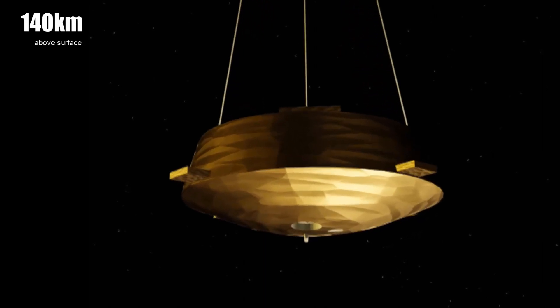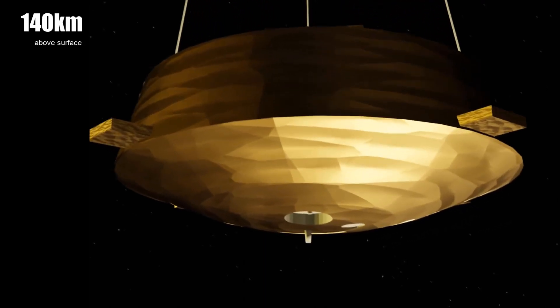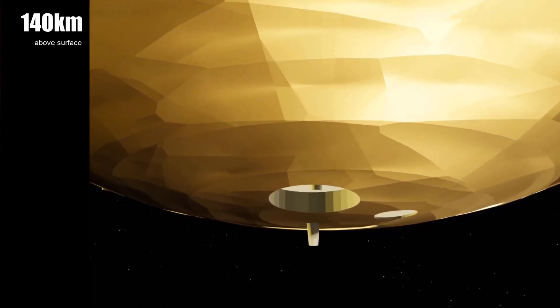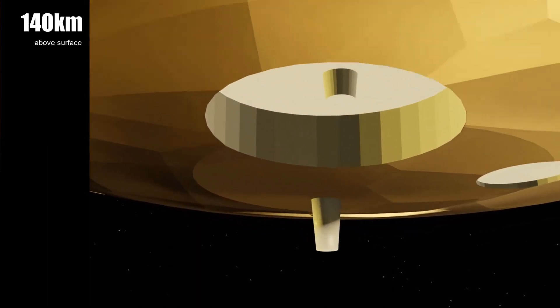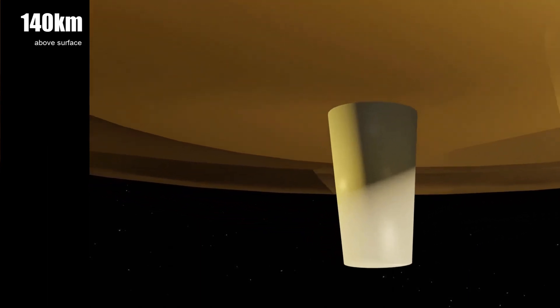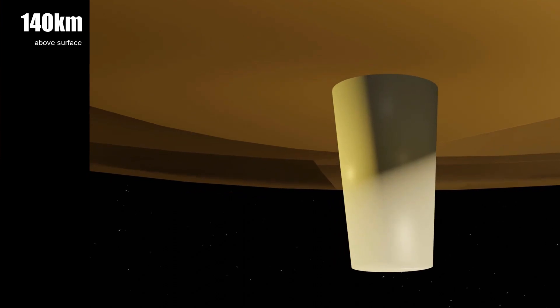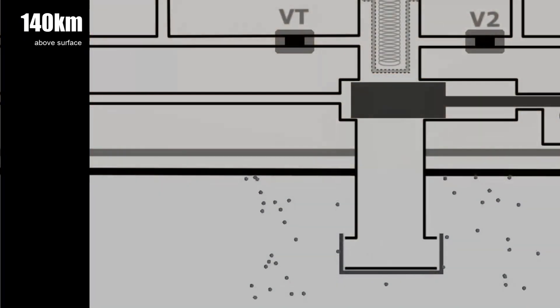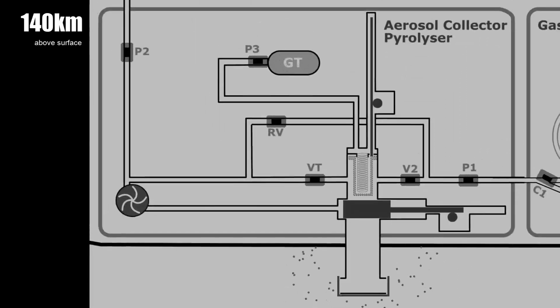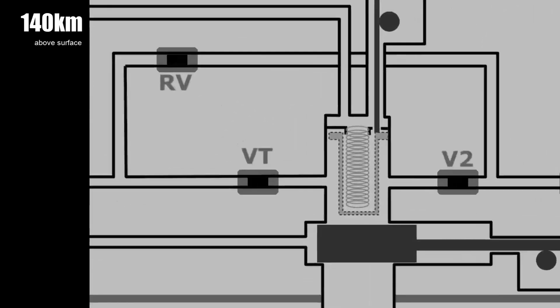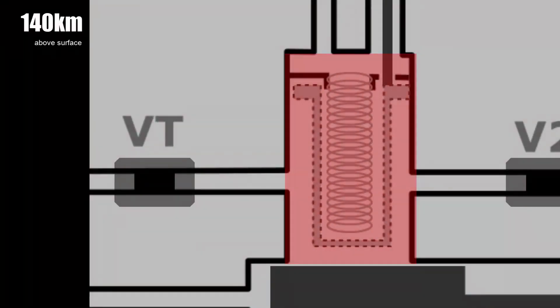It's important to note that the ACP is not an analytical instrument, but instead prepares a sample to be analyzed by the gas chromatograph mass spectrometer. So, this is the internal workings of the ACP. The heart of the system is the oven. It is here that the aerosol we collect during the descent through Titan's atmosphere is heated.